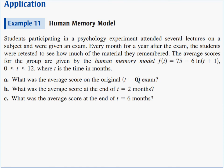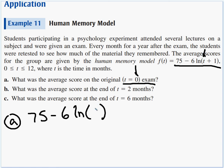So it says here, what was the average score of the original exam at t equals 0. So I'm going to take this function and just put in a 0 for t. 75 minus 6 natural log of, I'd plug in 0 for t, so that would be 0 plus 1 or 1. Remember our properties, the natural log of 1 is 0, so that 0 times this 6 wipes out that term. 75 minus 0 is 75. So the students went to some lectures, they took a test, the average score was a 75.